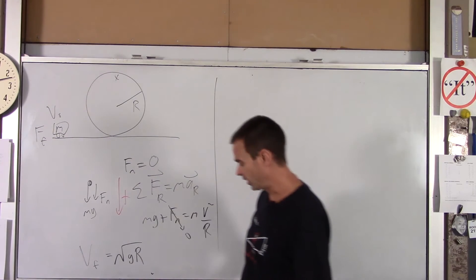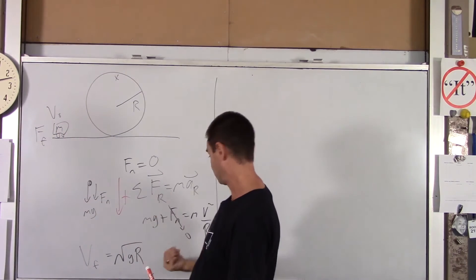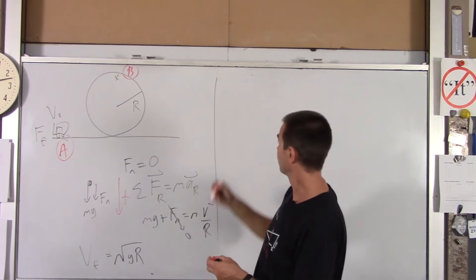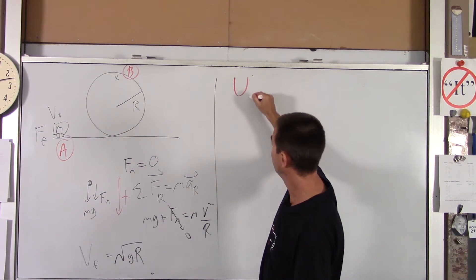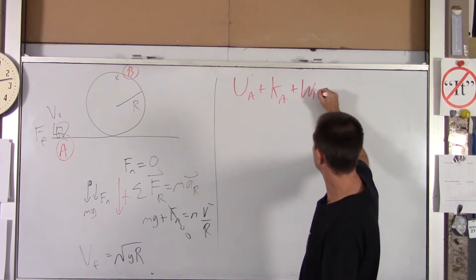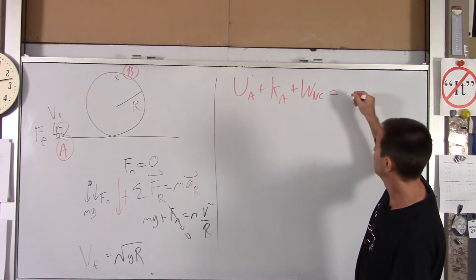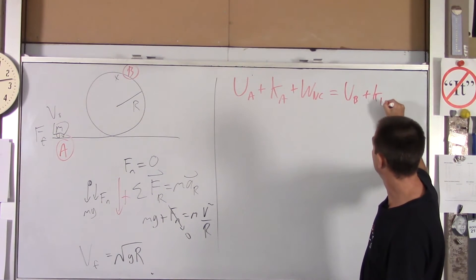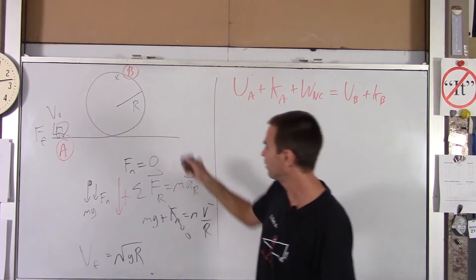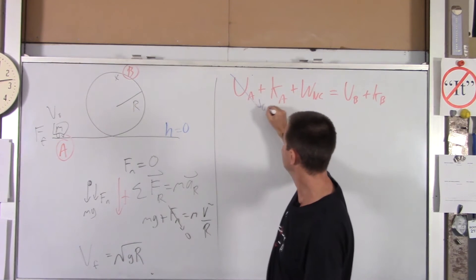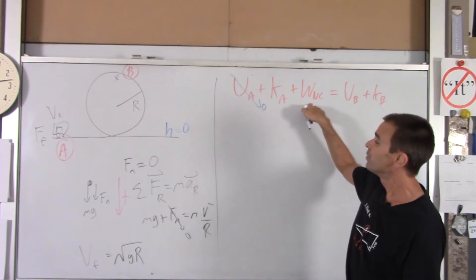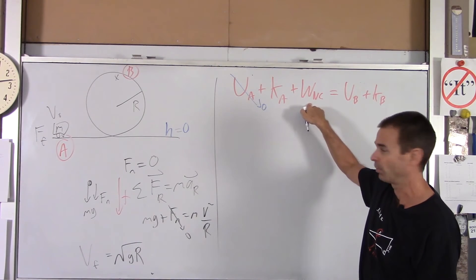Now we'll use our conservation of energy equation to figure out the velocity at the bottom. We'll call the bottom point A and the top of the loop point B, going from A to B. The conservation of energy equation is: kinetic and potential energy at A, plus work done by non-conservative forces, equals kinetic and potential energy at B. At point A, I'm calling the ground zero height, so there's no potential energy — but there is kinetic energy, since we're solving for the minimum velocity there.